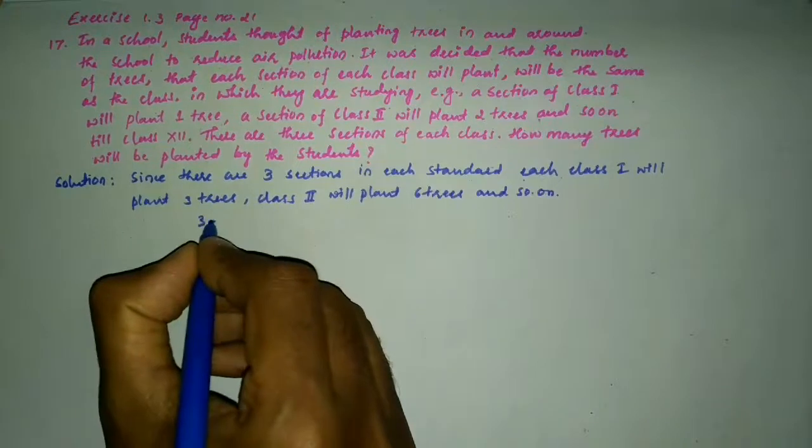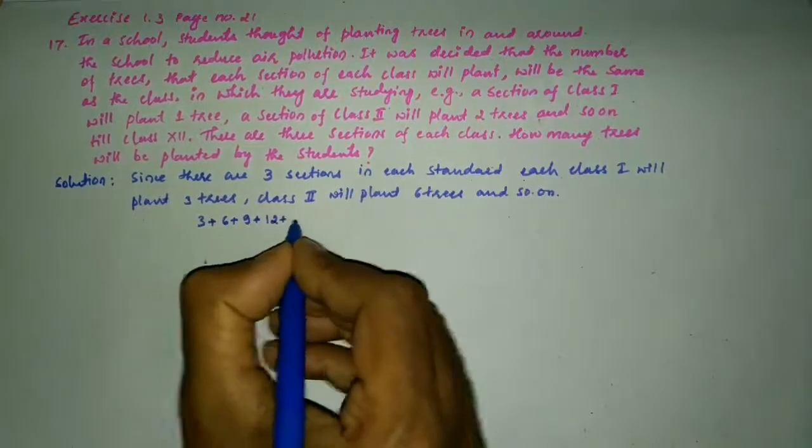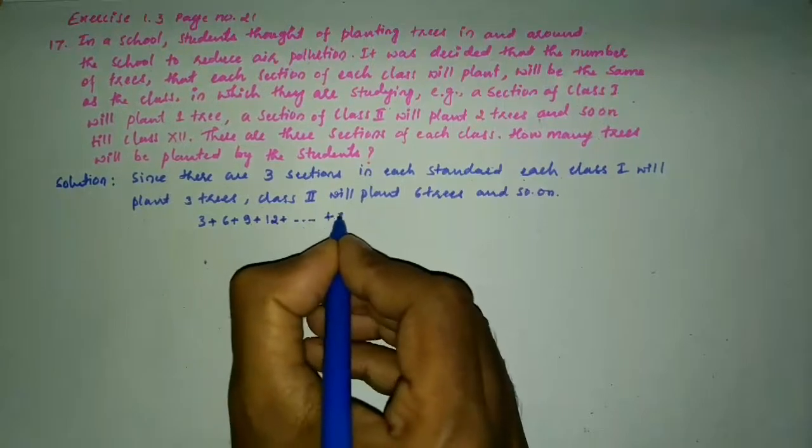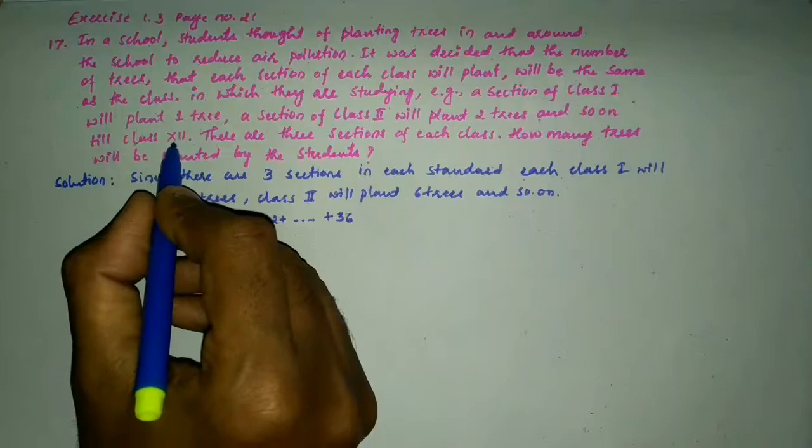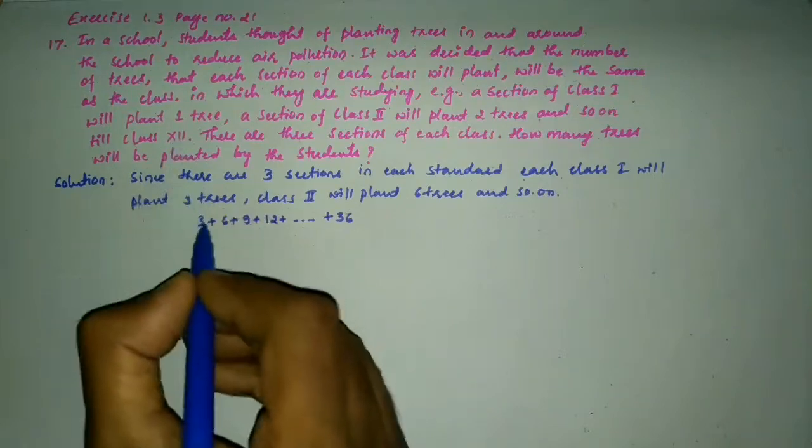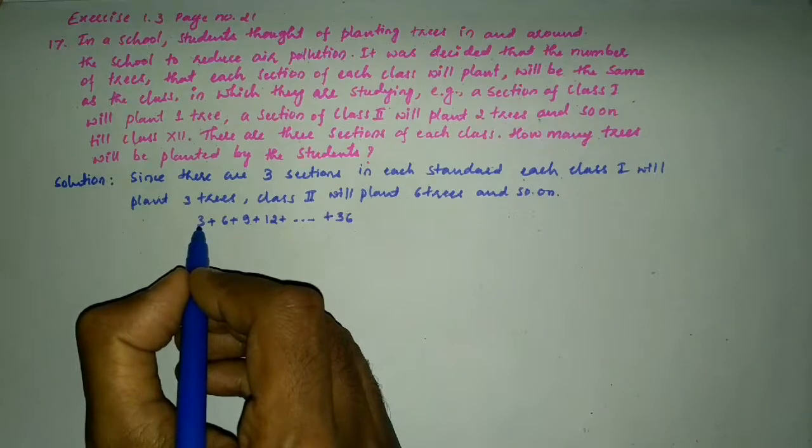So we have 3 plus 6 plus 9 plus 12 and so on up to 36, because 3 times 12 is 36, since 12 classes are there. Each class has got three divisions, three sections.